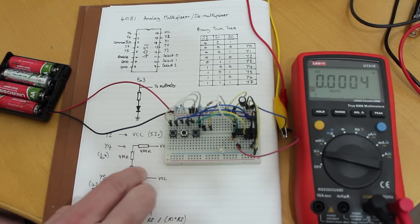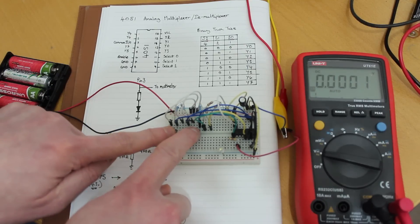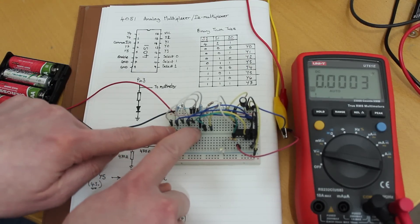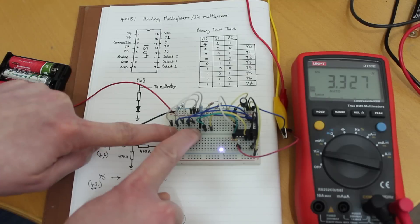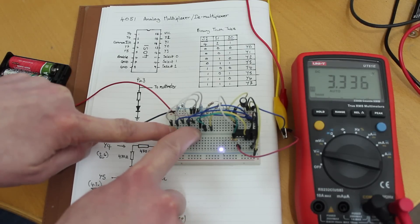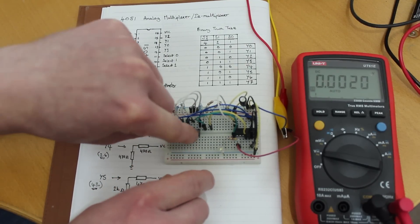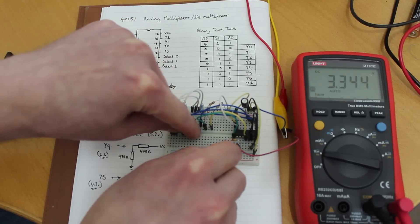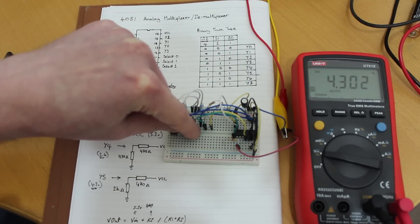And on Y5, which is pin 1 and select 0 and select 2. So these ones here, we've got 3.3 volts. But it actually should be 4.3. So let's pull that out. There we go, 4.3 volts.